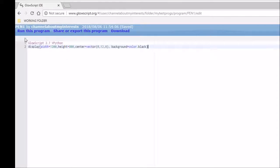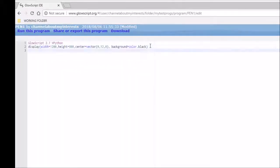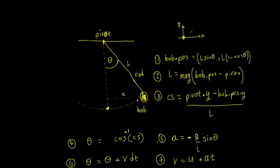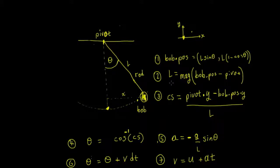It won't actually do anything yet because we have to create instances before it will run. So let's look at what exactly we want to create. If we take a pendulum, the system is made up of three components: a pivot, a length of string, and a little mass. We're going to call those things a pivot, a rod, and a bob.